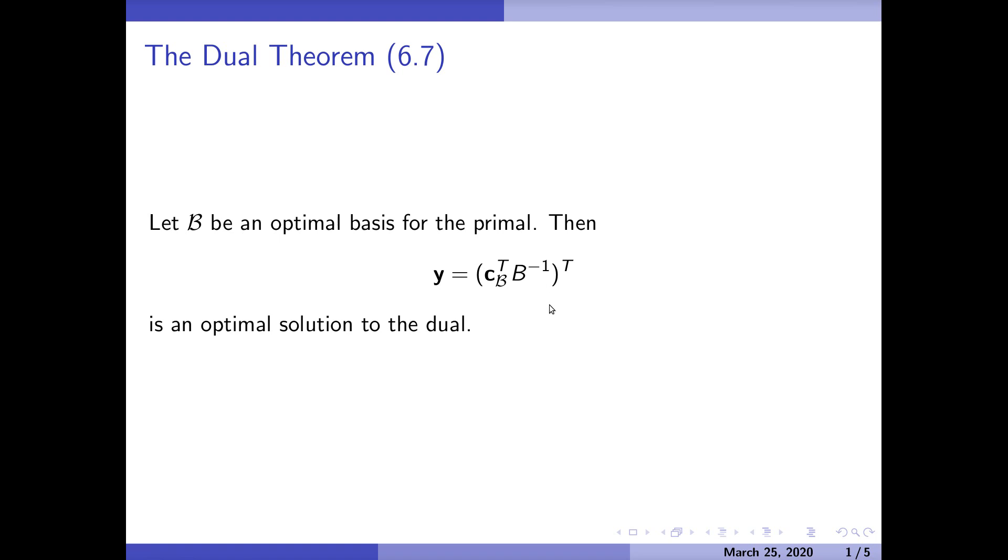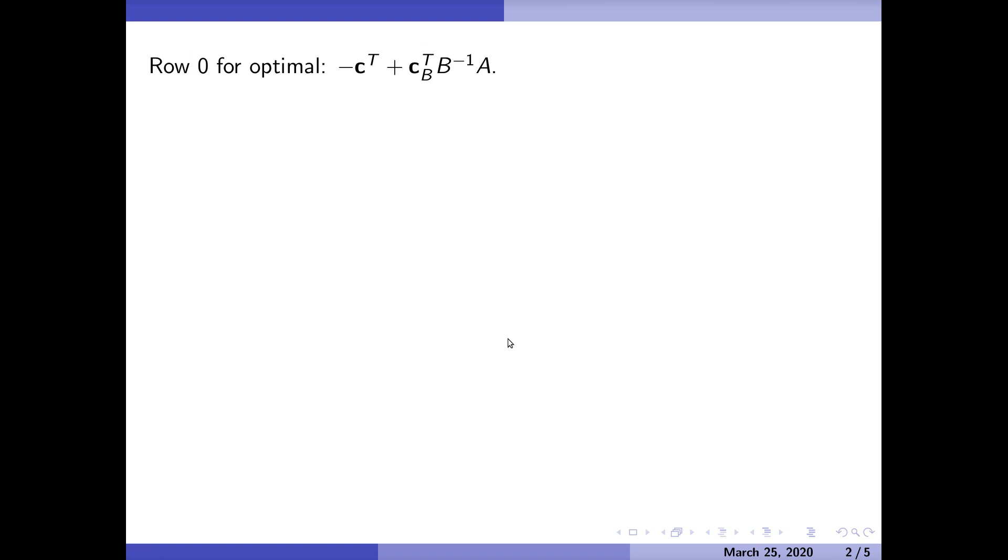Remember that c_B transpose B inverse itself is just a row and we're just picking out a column. That's going to be the optimal solution for the dual. Let's see how we compute this. Row zero for the optimal solution is given by this quantity, and again we see the dual sitting right in here as c_B transpose B inverse.